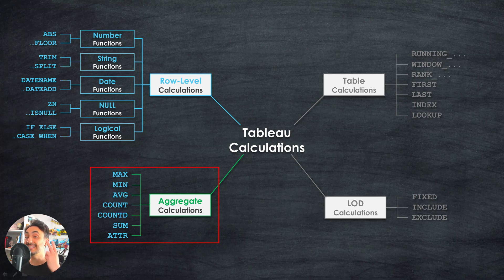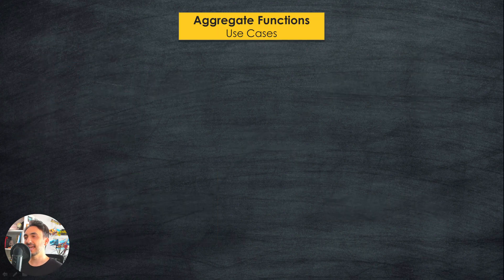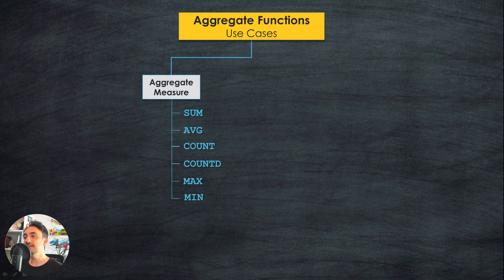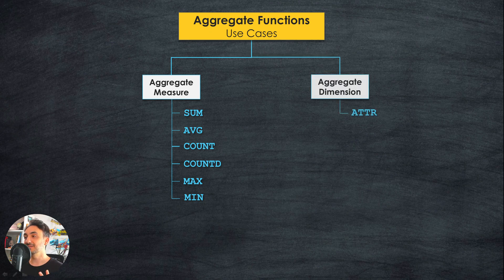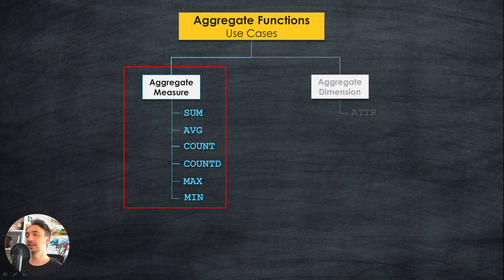Now we're going to talk about the second type of calculations in Tableau: the aggregate calculations. I split the functions into two groups. The first group aggregates the measures in our data source, so we have sum, average, count, and so on. The second group aggregates the dimensions of our data source, and here we have only one function: the ATTR (attribute).